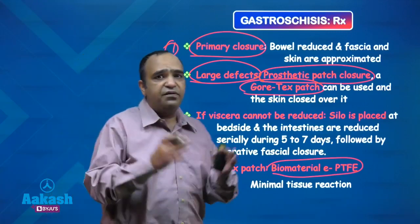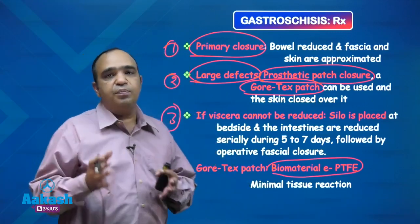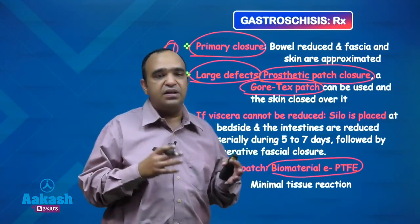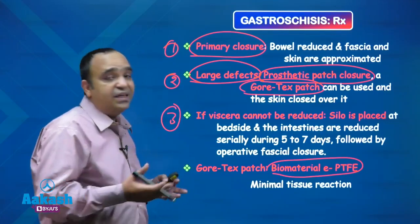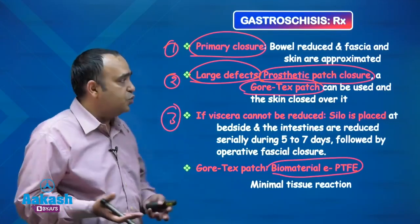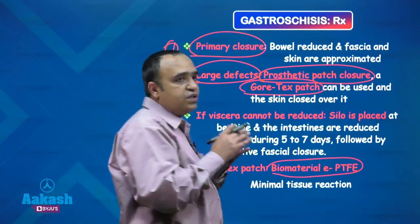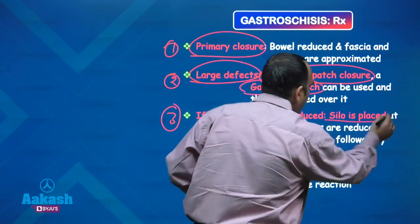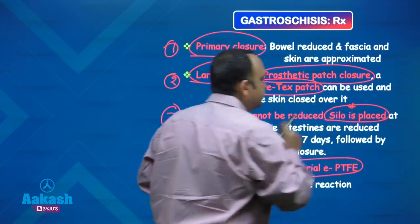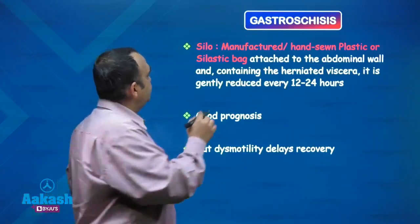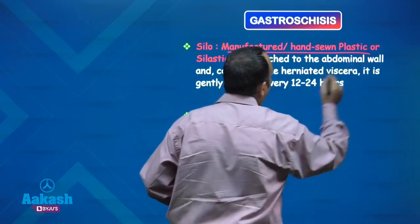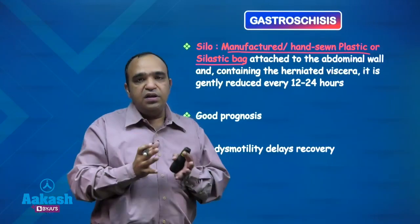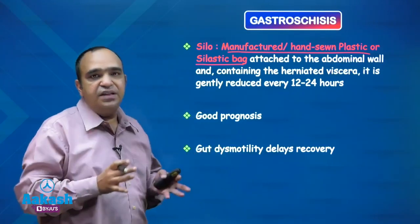Third, if the defect is wide and reduction of the bowel is not possible — the bowel may be edematous and thickened — we cover the bowel with a plastic or silastic bag called a silo. You must remember this term: silo. It is a hand-sewn or ready-made plastic or silastic bag attached to the abdominal wall covering the bowel.